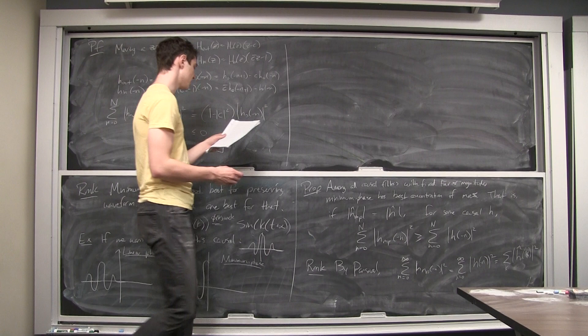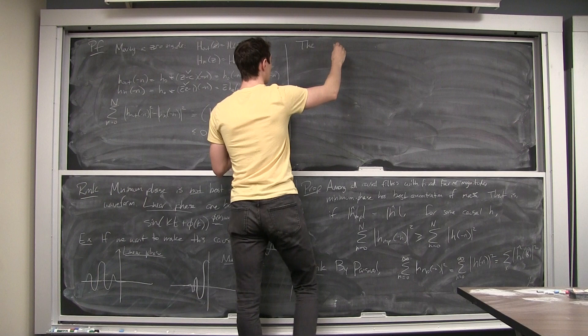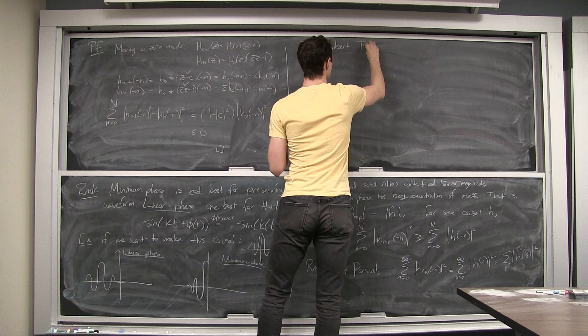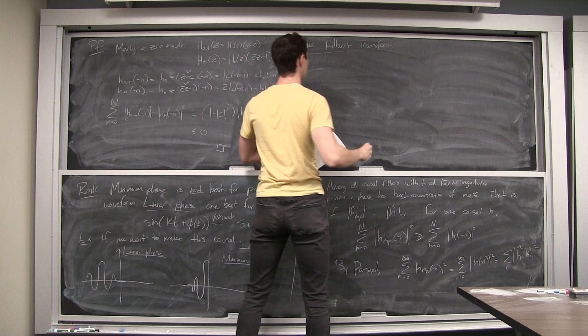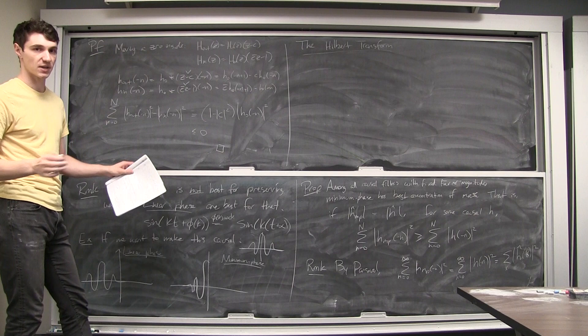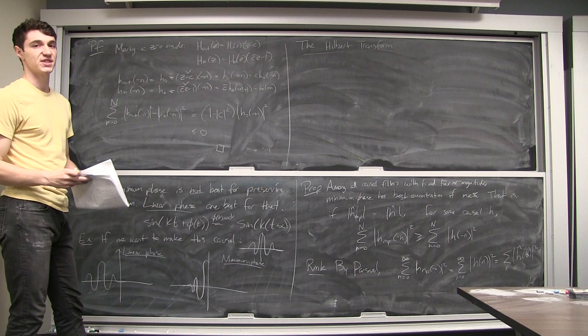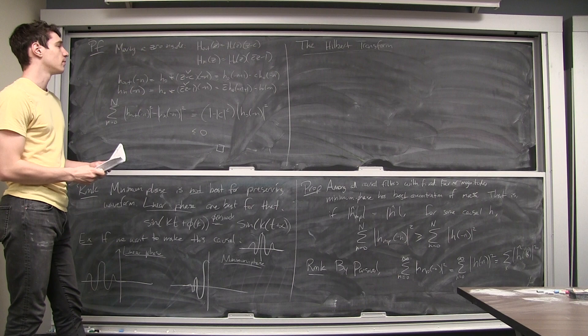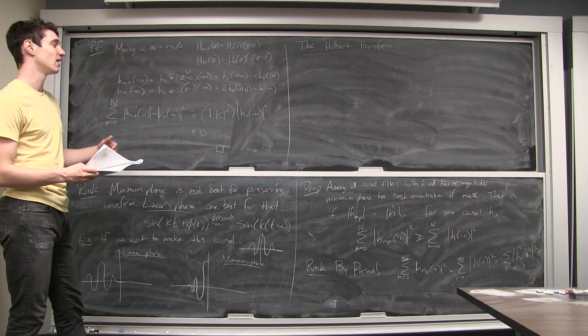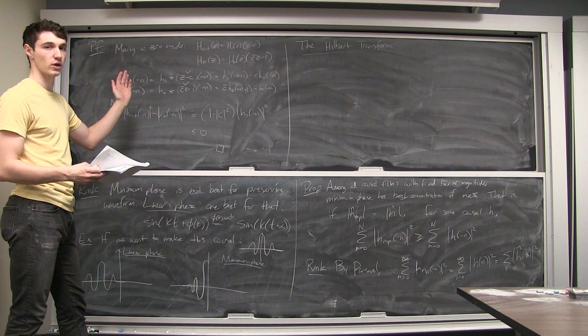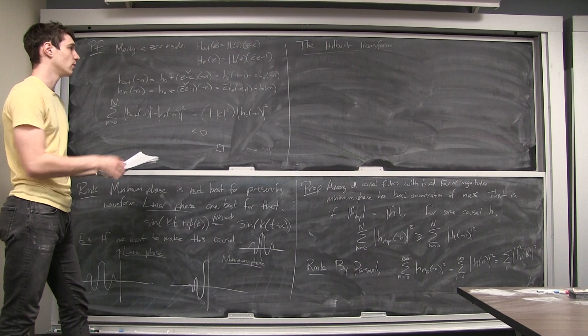Now we kind of understand minimum phase filters: flipping poles inside makes us causal, and flipping zeros inside concentrates energy toward time zero. The next topic is a practical consideration that motivates a way to do this in an automated way — the Hilbert transform. The problem is that factoring polynomials is computationally difficult, and you'd like a black box that doesn't take increasing amounts of time the more complex the filter. In a series of steps, I'll explain how to obtain a causal filter with the same Fourier magnitude without factoring polynomials.